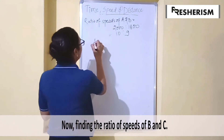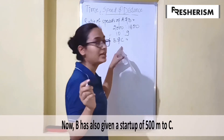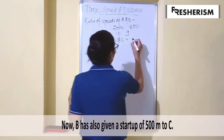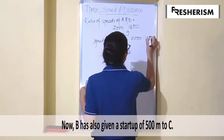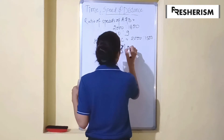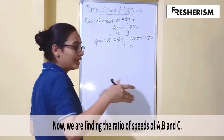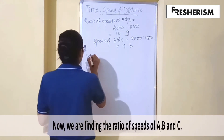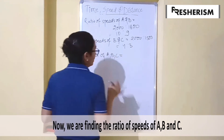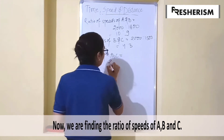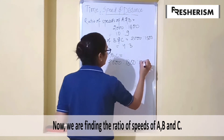Next is the ratio of speed of B and C. Here B also gives a start up of 500 meters to C. Therefore, it will be 2000 ratio 1500, which gives us 4 ratio 3. Now, the ratio of speeds of A, B and C will be equal to 2000 ratio 1800 ratio 1350.